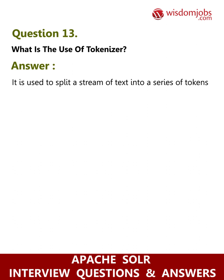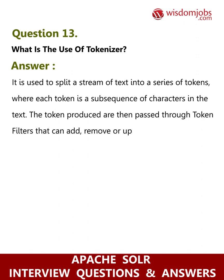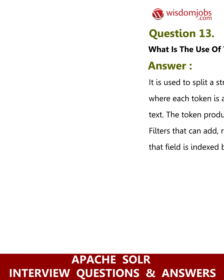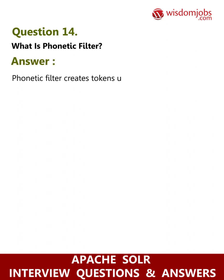Question 13: What is the use of a tokenizer? Answer: A tokenizer is used to split a stream of text into a series of tokens, where each token is a subsequence of characters in the text. The tokens produced are then passed through token filters that can add, remove, or update the tokens. The field is then indexed by the resulting token stream.